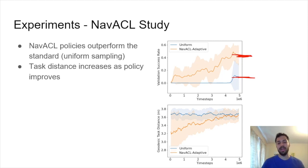What is NAVACL actually doing behind the hood? Well, let's look at one of these geometric measures. The one we're looking at here is geodesic task distance. This is simply the separation from start to goal. Intuitively you would imagine that as our agent gets better at navigation it can tackle longer tasks, and this is what we see here. Over time, as our agent improves, NAVACL increases the distance between the start and goal.